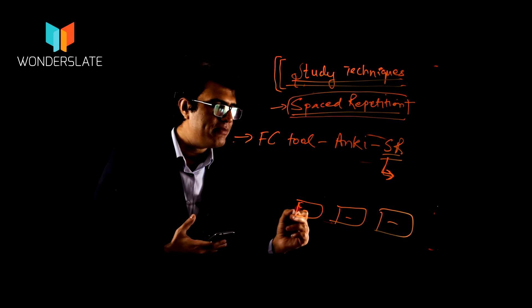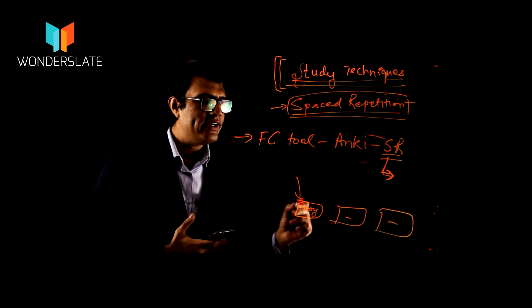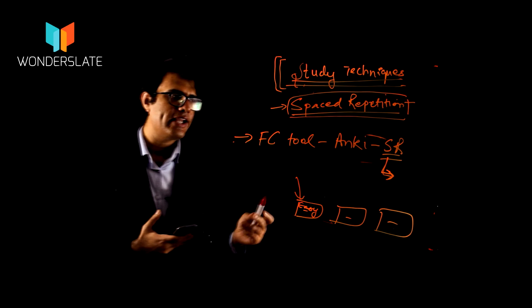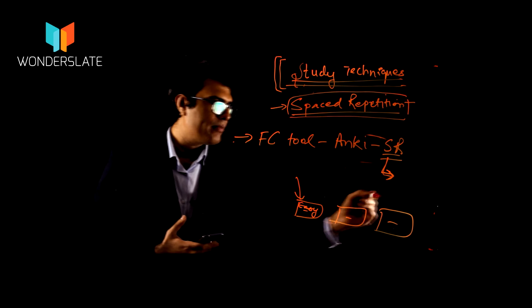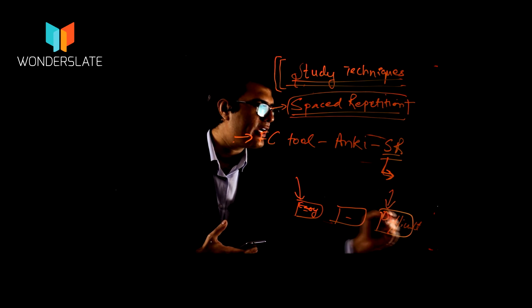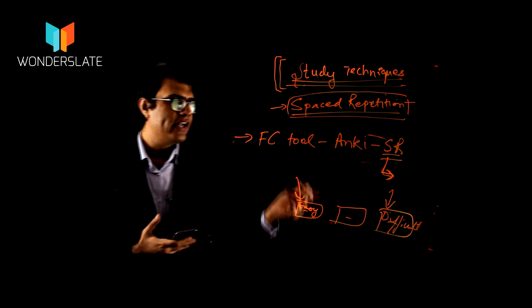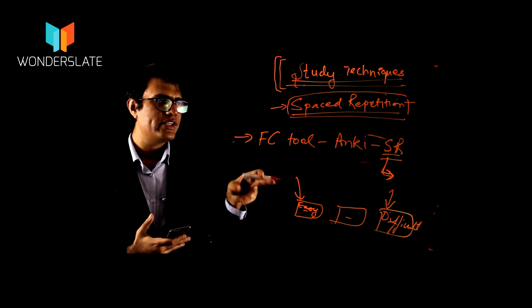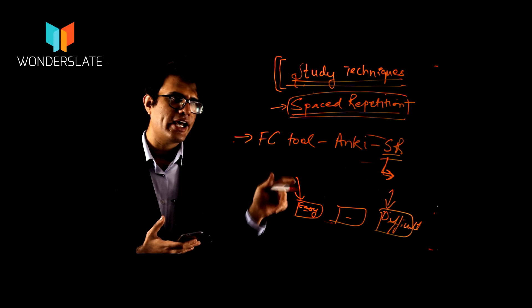if you supposedly mark it as easy, then you would see that question and that topic at lesser frequency. Suppose you mark it as difficult, which means you were not able to recollect that question, then you would see that question much more quickly and at much higher frequency.